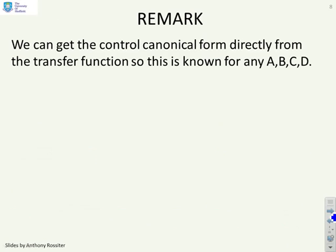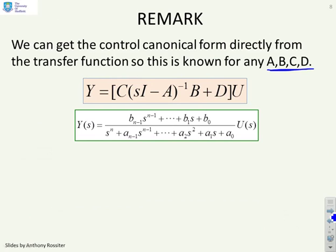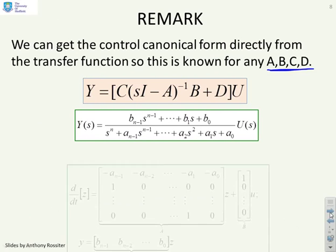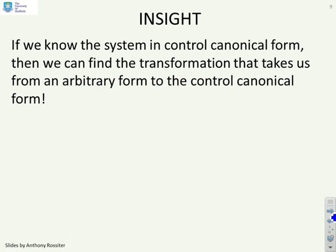A key remark: we can get the control canonical form directly from the transfer function. If we know A, B, C, and D, we can write down the control canonical form almost by inspection. We find the transfer function using G(s) = C(sI - A)⁻¹B + D, and once we have that, we write the control canonical form by putting the denominator parameters in the top row of Â.